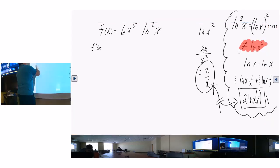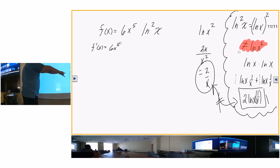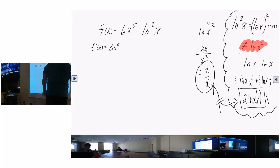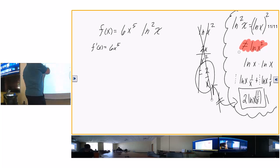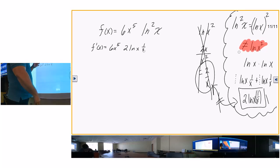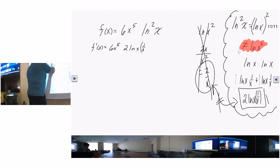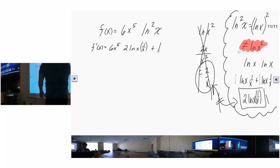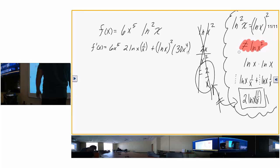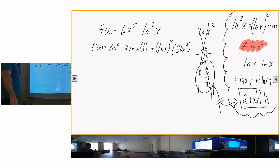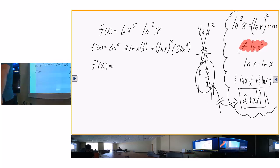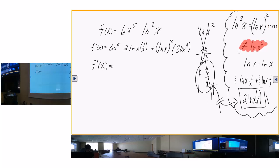Using the product rule on f of x equals 6x to the fifth times ln squared of x: f prime of x equals first times the derivative of the second — which is 2 natural log of x times 1 over x — plus the second times the derivative of the first, which is 30x to the fourth. The x in the denominator cancels, giving 12x to the fourth natural log of x plus 30x to the fourth natural log of x quantity squared. That's it — not much algebra, mostly exponential simplification.